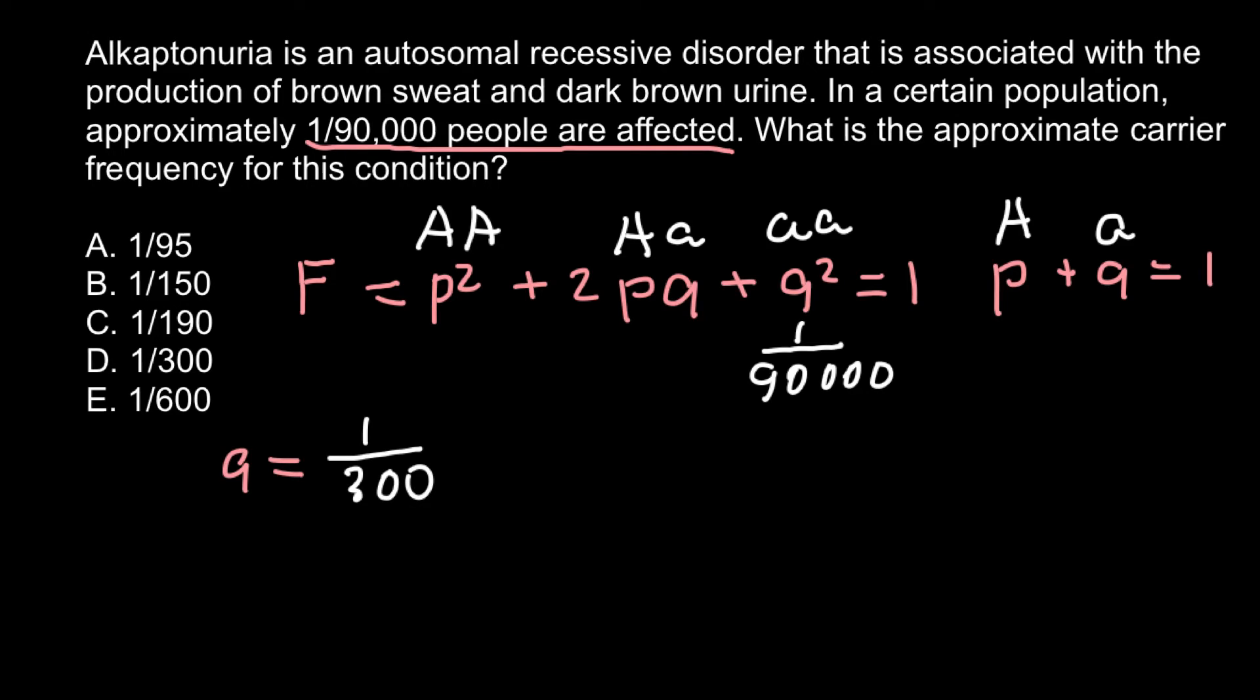This is going to be the frequency of q, or the recessive allele. And if we divide 1 by 300, we can get a decimal number which would equal 0.0033. I am rounding numbers, so let's put this frequency here: 0.0033.